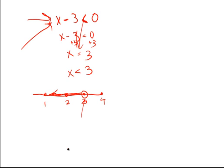However, any number less than 3 describes the equation above. So we could even put 2.8 in there. If we put 2.8 minus 3, we end up getting negative 0.2, which of course is less than zero.